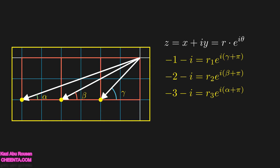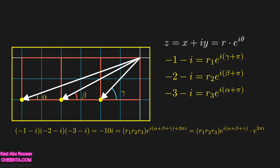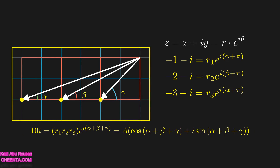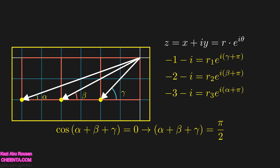Now I need to find the sum alpha plus beta plus gamma. I can multiply these complex numbers, since multiplication adds the exponents. The equation has e^(3πi) as a common factor, and that equals minus one, so the equation reduces accordingly. The left-hand side is a pure imaginary number, so to match it the right-hand side requires cos(alpha plus beta plus gamma) equals zero. Therefore the sum of the angles equals pi over 2, which is 90 degrees. That's the solution using complex numbers.